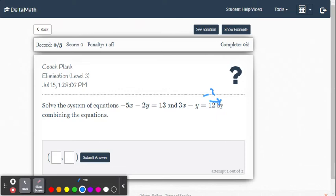So if I multiply that equation by negative 2, I get negative 6x plus 2y equals negative 24. And so now you see my system, I have coefficients of y that are opposite. We use the multiplication property of equality, so we didn't change the value of that equation. So we are in business now.